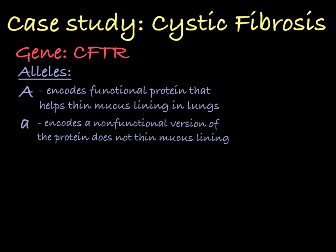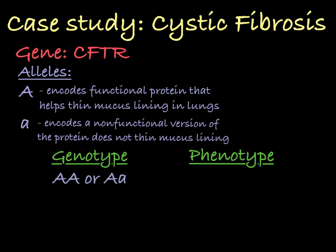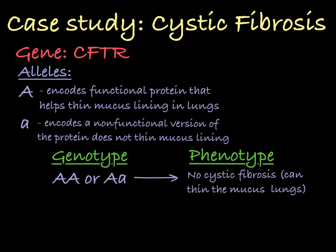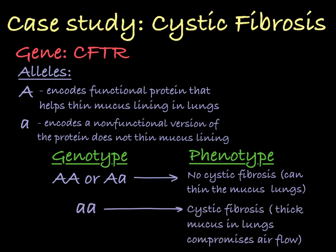So in this case, a person with the genotypes big A big A or big A little a will not have cystic fibrosis because they will have a protein that helps thin the mucus lining in their lungs. And a person who is homozygous recessive will have cystic fibrosis, a disease characterized by thick sticky mucus buildup in the lungs which compromises air pathways.